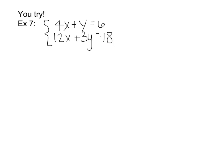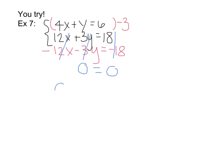This is the last example. Solve 4x plus y equals 6 and 12x plus 3y equals 18. Comparing coefficients — 4x and 12x, y and 3y — multiplying the top by negative 3 gives negative 12x minus 3y equals negative 18. Everything cancels out, leaving 0 equals 0, which is always true. Since that's always true, the system has infinite solutions.